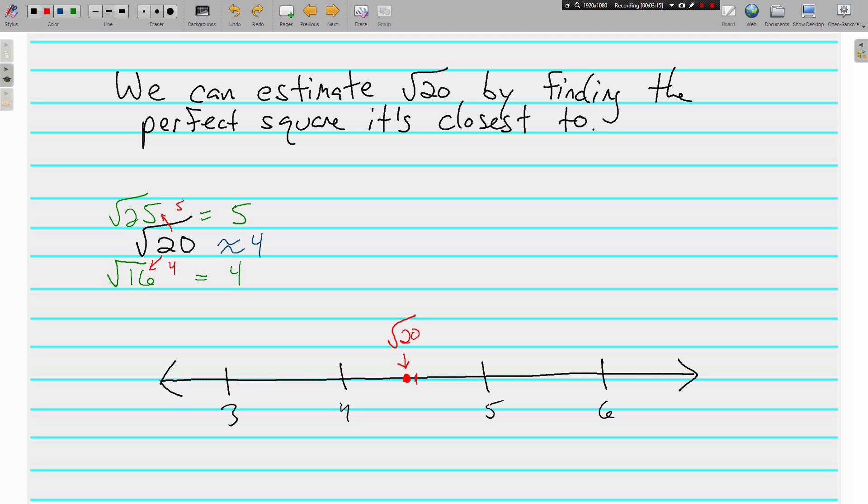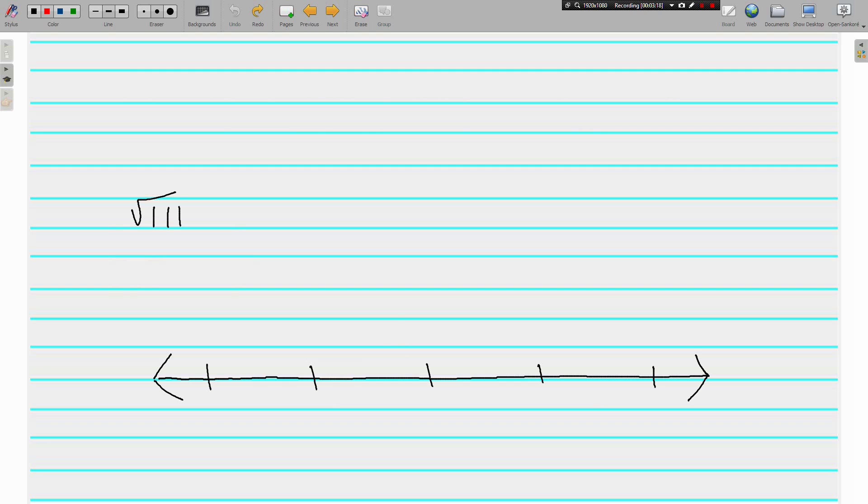Let's look at another. Here we've got the square root of 111. Let's start by writing down the perfect square that's less than 111, which is square root of 100 equals 10, and the perfect square above 111 is 121.